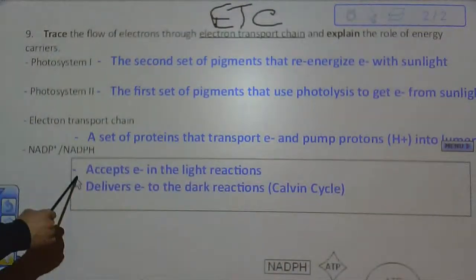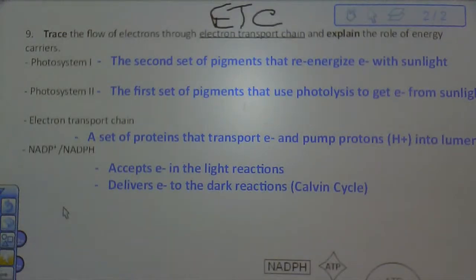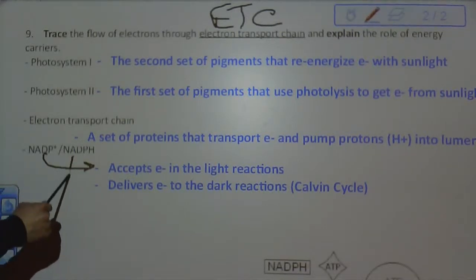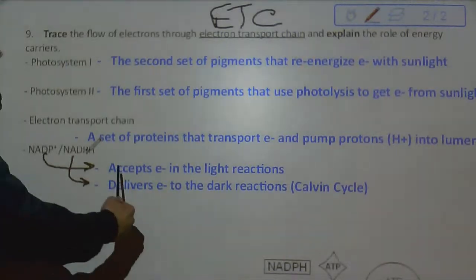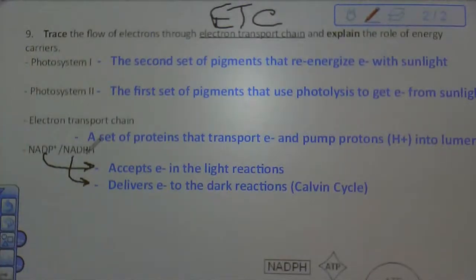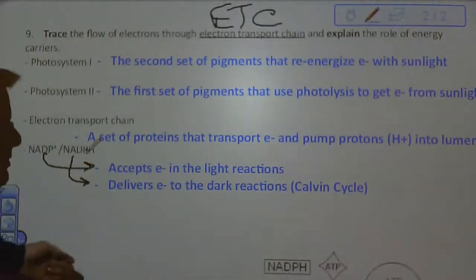And then last up, NADP+ and NADPH. NADP+ is the electron acceptor in the light reactions. NADPH is the electron carrier. Again, remember, NADP dot dot H to represent those two electrons. NADP+ accepts the electrons. NADPH delivers the electrons. Again, it's delivering them to the Calvin cycle, or the dark reactions.